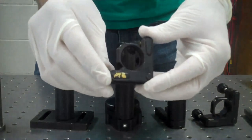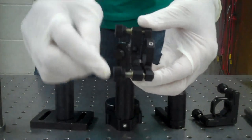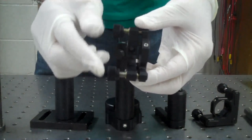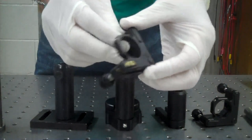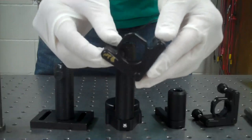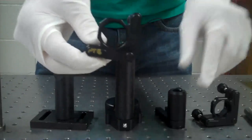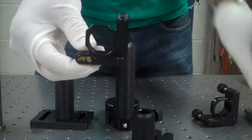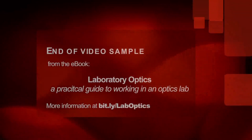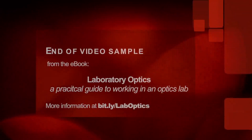Mirrors are typically mounted in a mount that has actuators to adjust the tip and tilt of a mirror. These mirror mounts are typically sold independent of the posts that hold them up. There's a few methods for holding them up. There are these posts that attach to the mount and then go into a post holder.